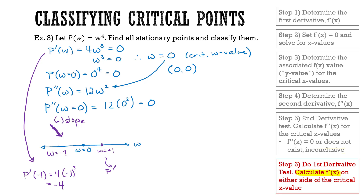Now for w = 1, I do the same thing. p'(1) = 4 times 1 cubed, which gives me positive 4. So the slope in the region when w is above 0 is positive. And I already determined that the slope is 0 at w = 0. So now I can connect the shape, and I know that I'm dealing with a minimum.